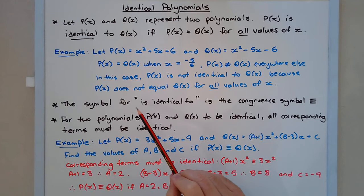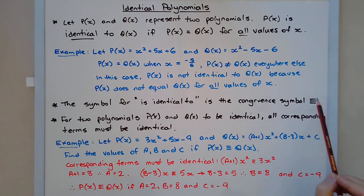The symbol for is identical to is the congruent symbol. So these are the three horizontal parallel bars.